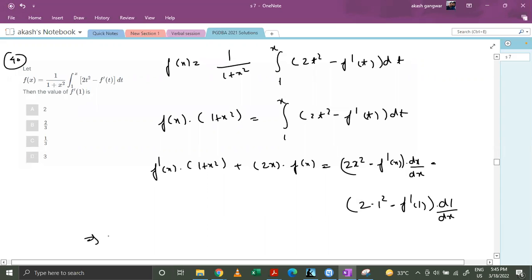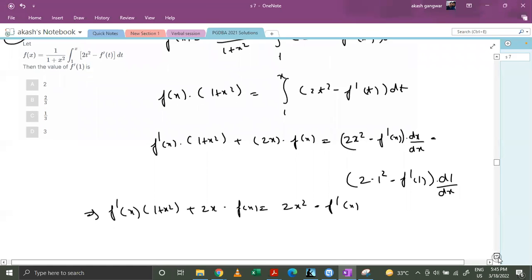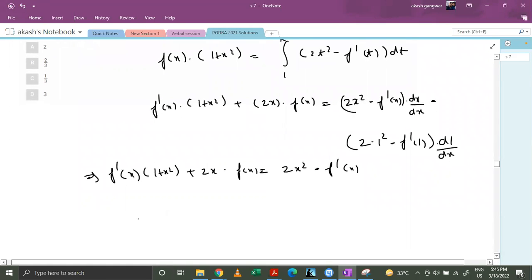So we get f'(x)(1 + x²) + 2x·f(x) = 2x² - f'(x). Now plugging in x = 1: f'(1)(1 + 1) + 2·f(1) = 2 - f'(1).